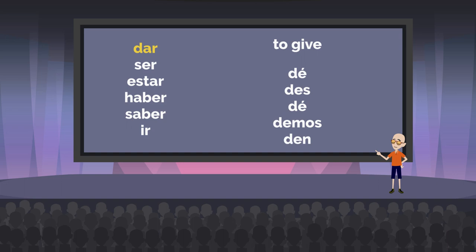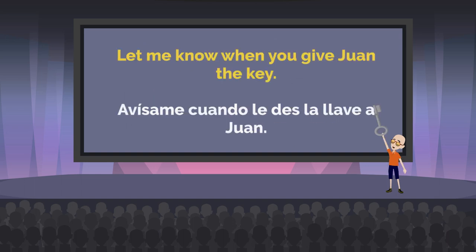Our first one up is dar, which means to give. And our conjugations are dé, des, dé, demos, den. You'll notice there's an accent on that first and third person form. I always think that people learn better when they have examples to look at, so we're going to be throwing those in after each verb. Here's our first one: 'Let me know when you give Juan the key.' Avísame cuando le des la llave a Juan. If you're not sure why I'm using the present subjunctive in this sentence, you really need to go back and watch lesson one, where I cover this particular construction in detail.